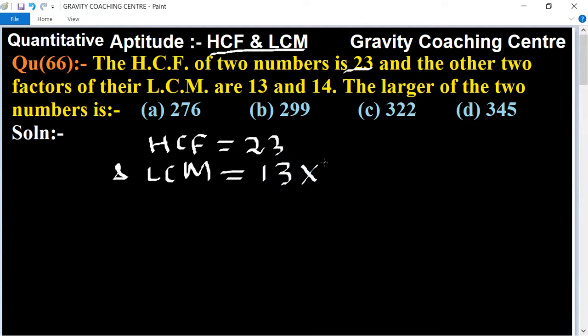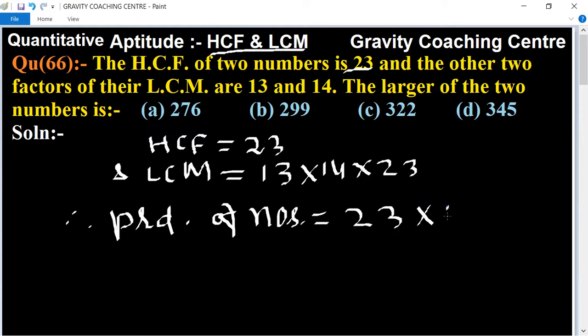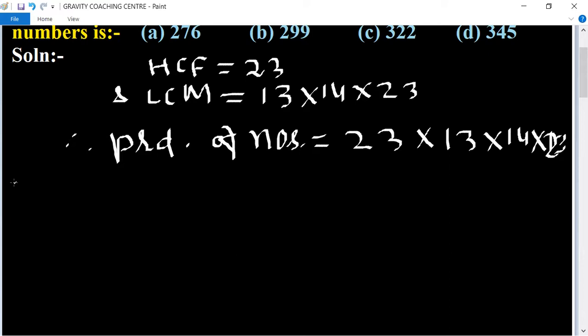HCF is 23, so therefore, product of numbers equals... We know that the formula is HCF into LCM, which means 23 into 13 into 14 into 23. So clearly...